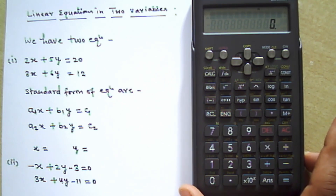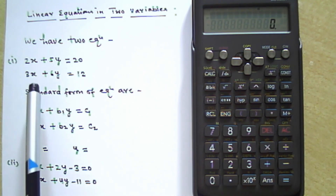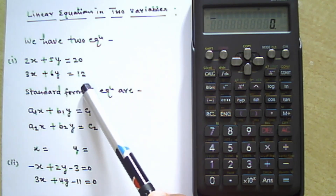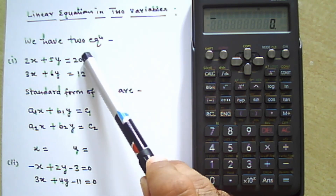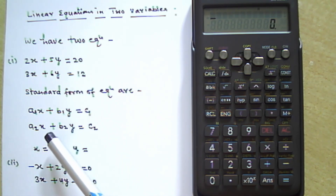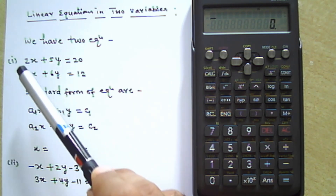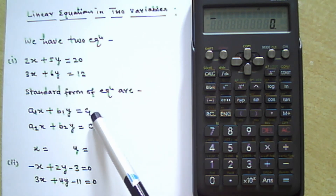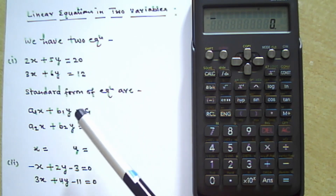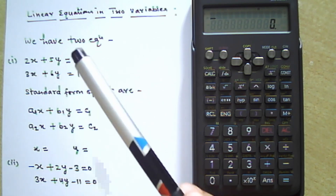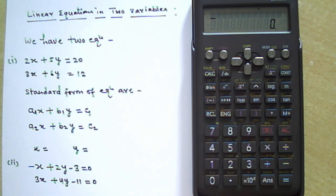Suppose we have two equations: 2x + 5y = 20 and 3x + 6y = 12. If we compare these two equations with the standard form, you can find the values: a1 = 2, b1 = 5, c1 = 20, and similarly a2 = 3, b2 = 6, and c2 = 12. We will use these values to find x and y using this calculator.